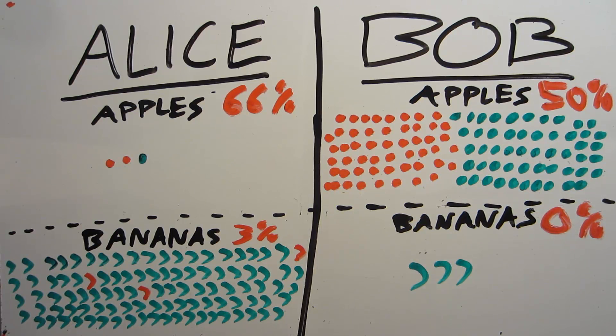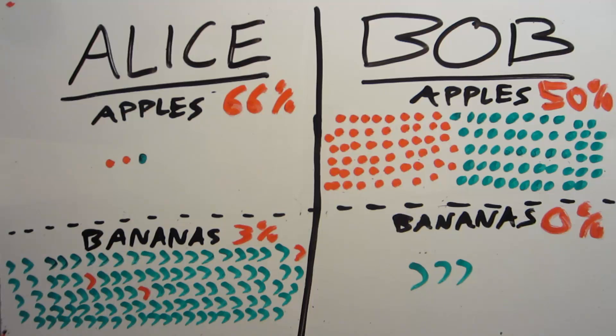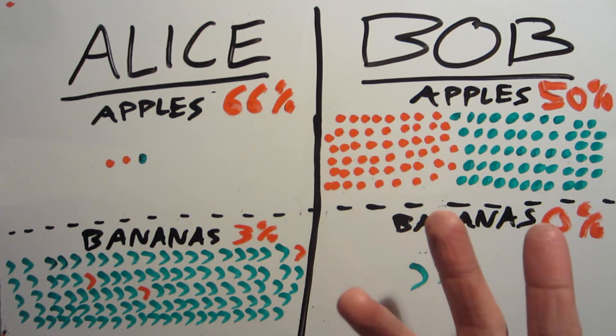Now Alice feels like this is ridiculous, because if you combine the fruits that both vendors have to offer, they've both got a total of 103 fruits. And of those 103, 50 of them are bad at Bob's cart, and only 5 are bad at her cart. How can his possibly be better?